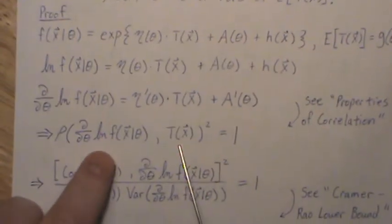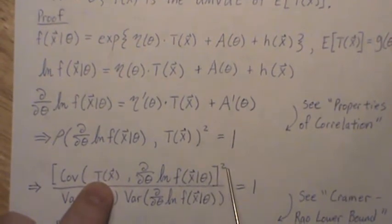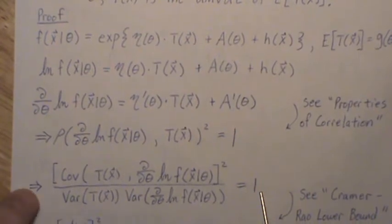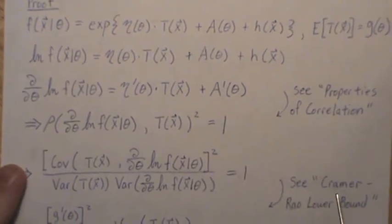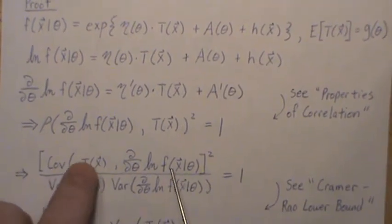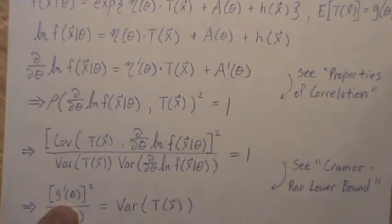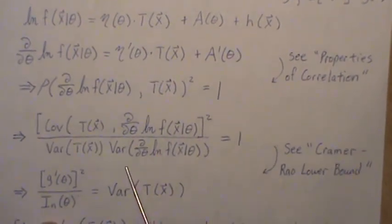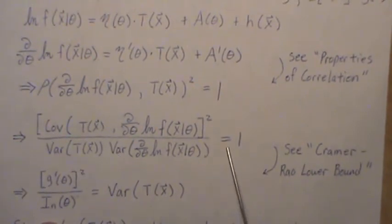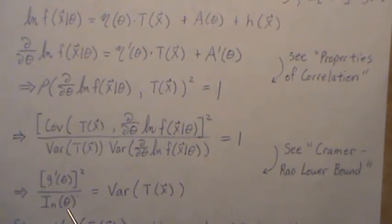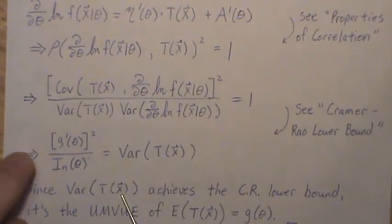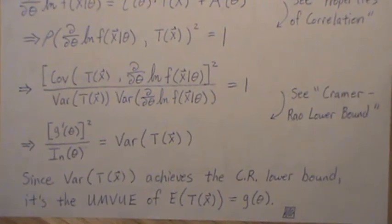The squared correlation between two variables is defined as the covariance squared divided by the product of the variances, and that equals 1. In the Cramér-Rao lower bound video, we prove that the covariance between these two variables is the derivative of G of theta. Multiplying the variance of our estimator up, the variance of the derivative of the log likelihood is the Fisher information. Since the variance of our unbiased estimator achieves the Cramér-Rao lower bound, it is the UMVUE of its expectation.